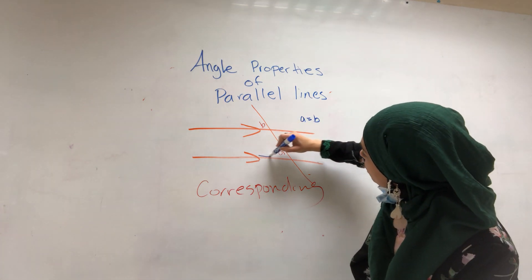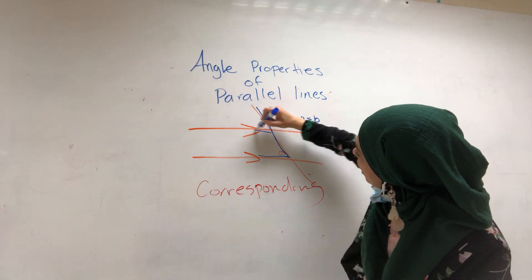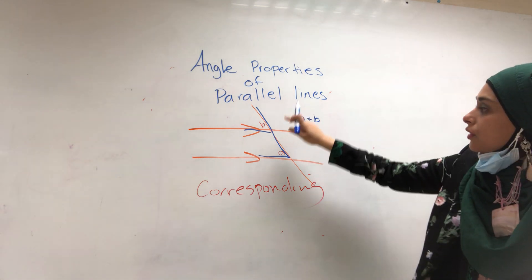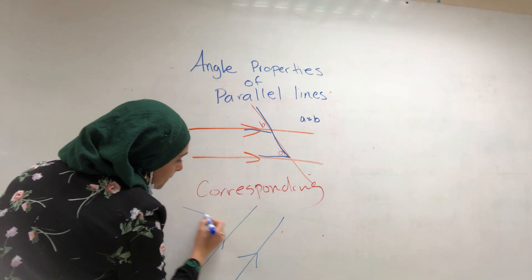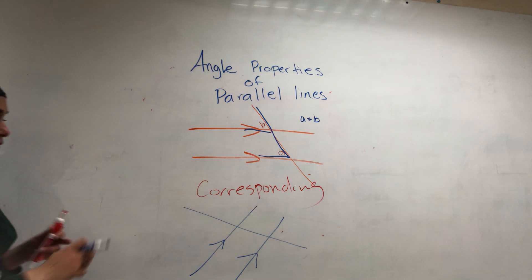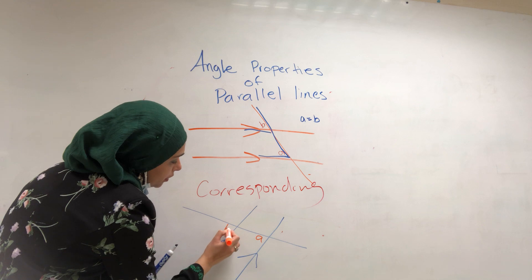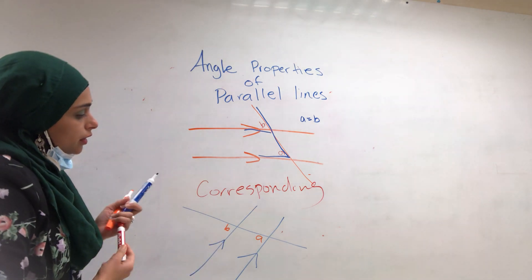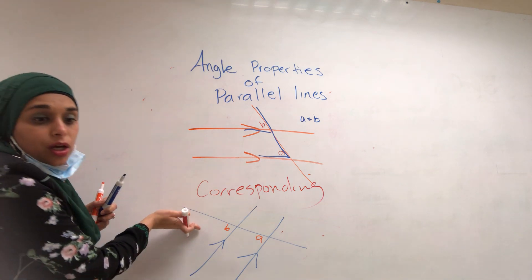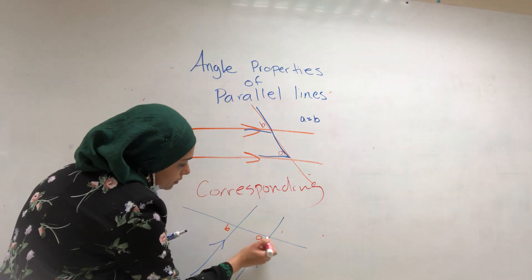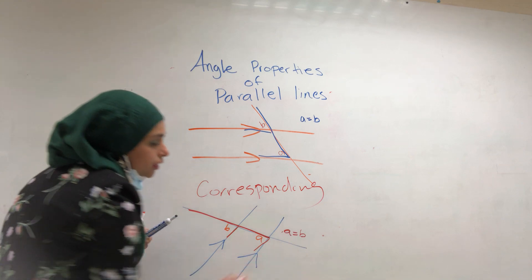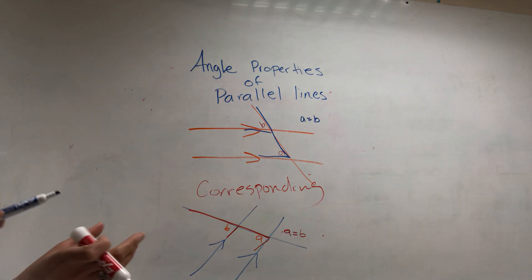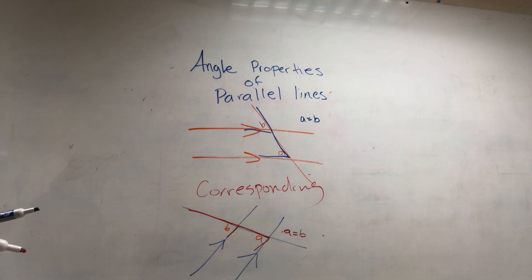Another way to remember corresponding angles is that they form the letter F. When you see that letter F being formed, you know you're looking at corresponding angles. They're on the same side of the transversal, and these two angles will have the same degree because they are equal angles. So those are corresponding angles — the first type we're looking at.